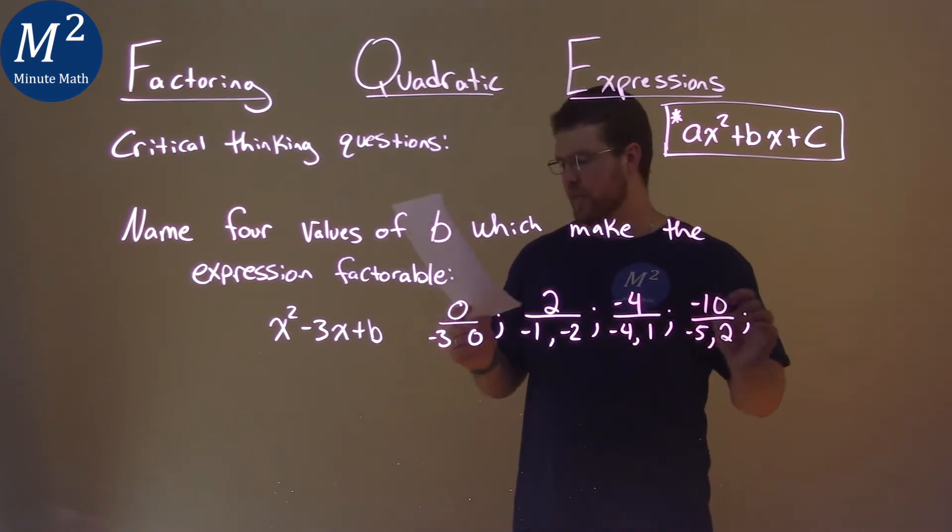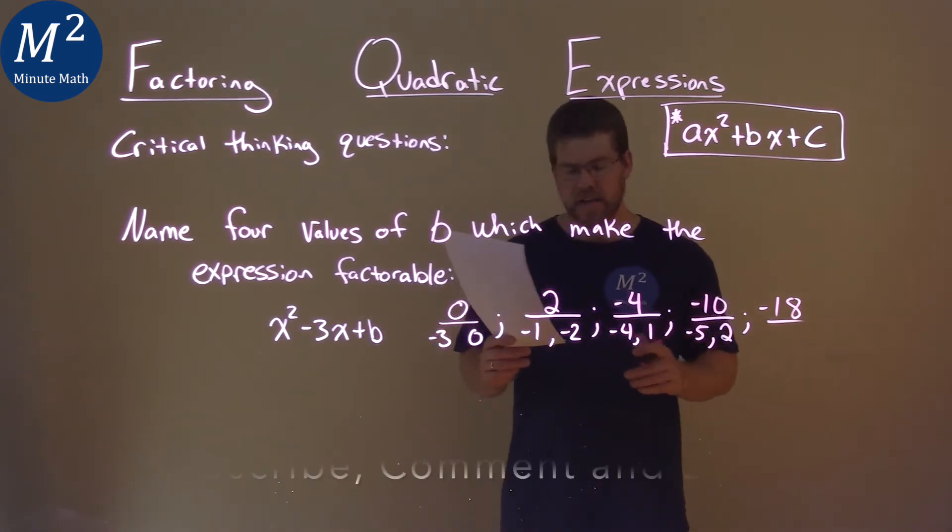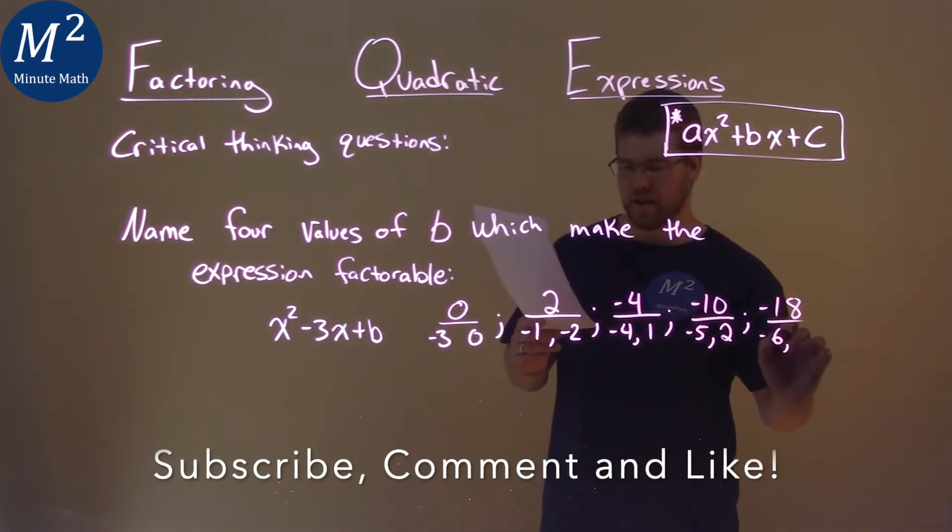And let's go one more even though I said 4. Let's keep going on this gravy train. Negative 18. Negative 18 is negative 6 times positive 3. And we add those two values together and we get negative 3.